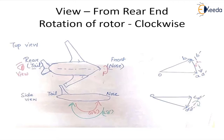Here we have made a top view of the aircraft. The front end is also called the nose end — these terms are very important because many times in questions, instead of giving the front end, it is given as the nose end. So we should know front and nose are the same. The tail end is also known as the rear end. The first case we are taking: the viewer is viewing from the rear end of the aircraft. This is the side view — the right-hand side view of the aircraft.